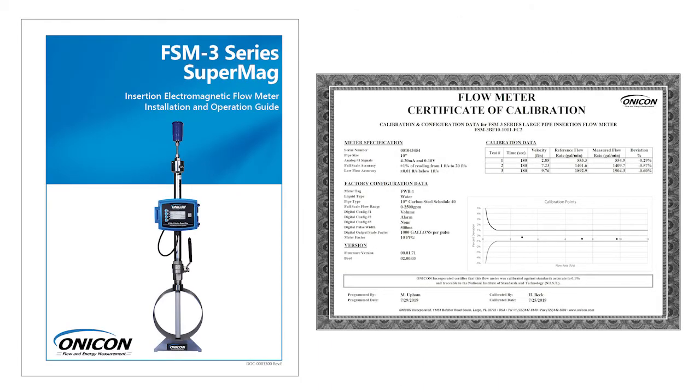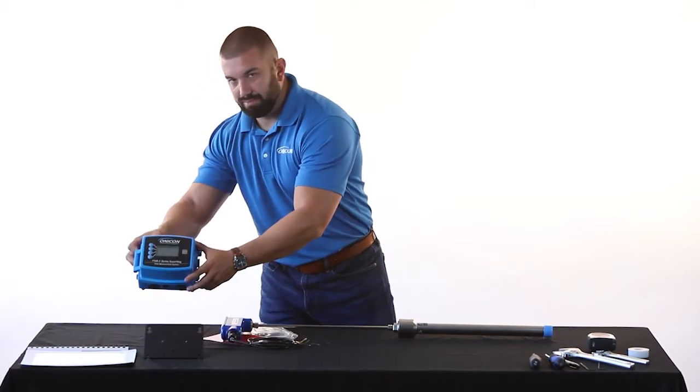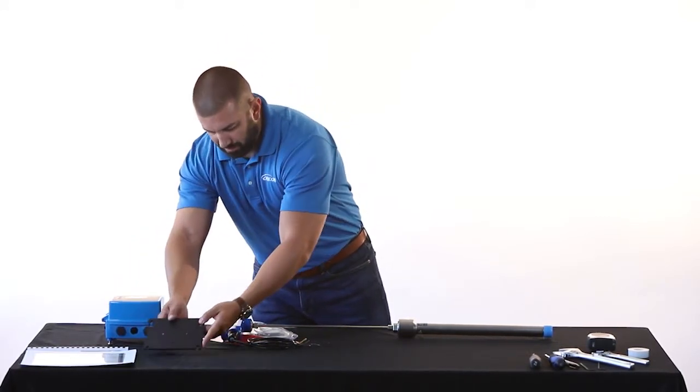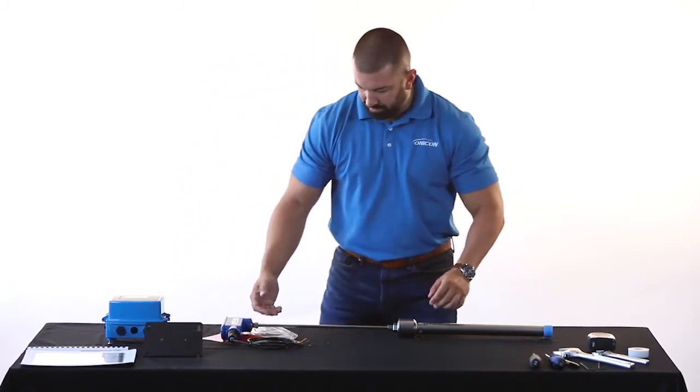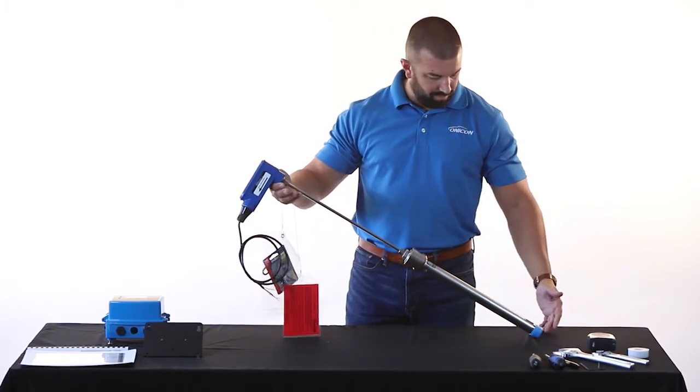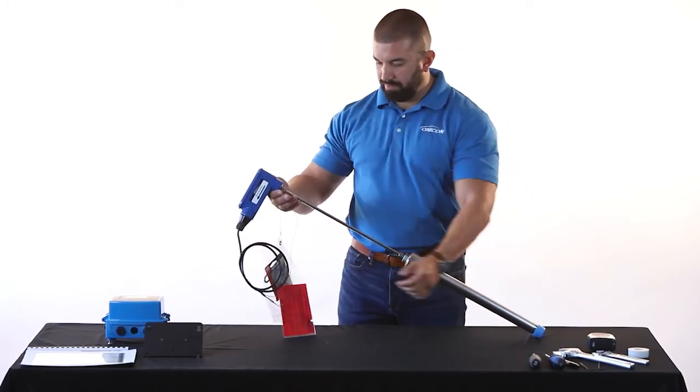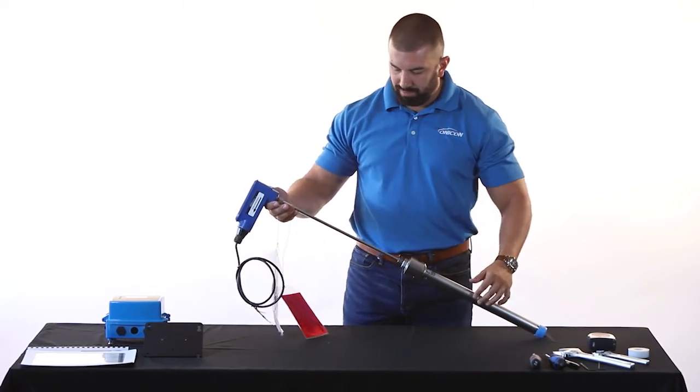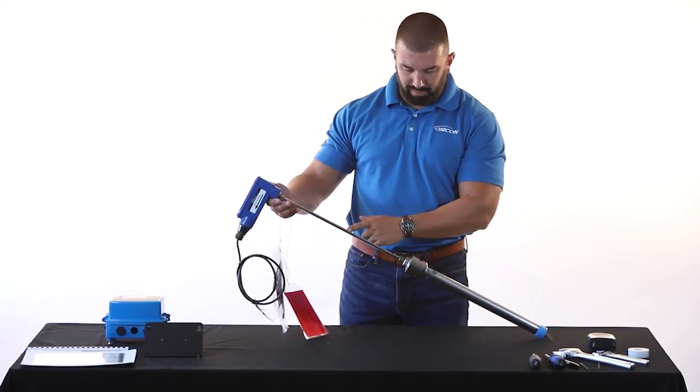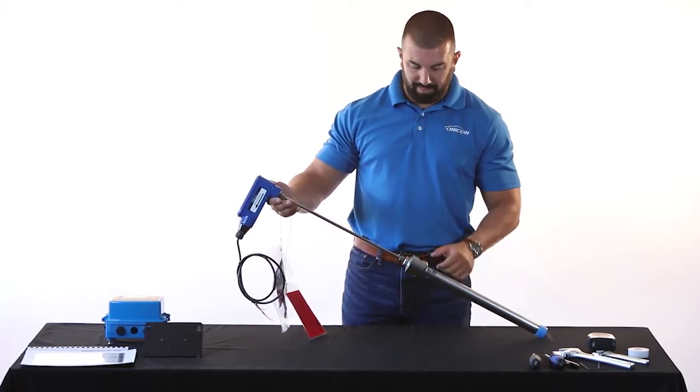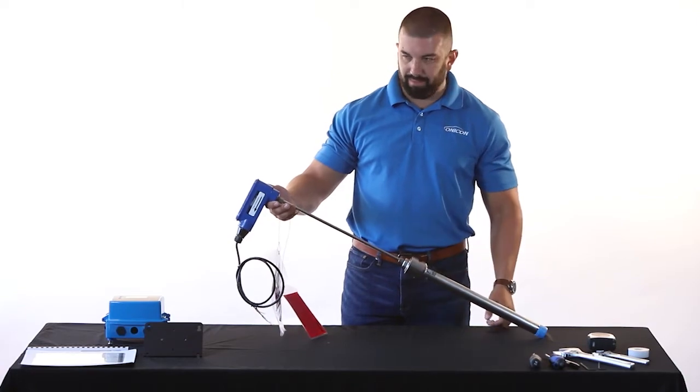Along with the manual and meter calibration certificate, your FSM will come shipped with the Flow Meter Transmitter Electronics Enclosure, the Transmitter Mounting Bracket Kit, the Flow Sensor Assembly, Electrode and Coil Wire Cable, the Flow Sensor Stem, Hot Tap Adapter Fitting, the Hot Tap Adapter Preload Housing, and the Flow Sensor Enclosure.